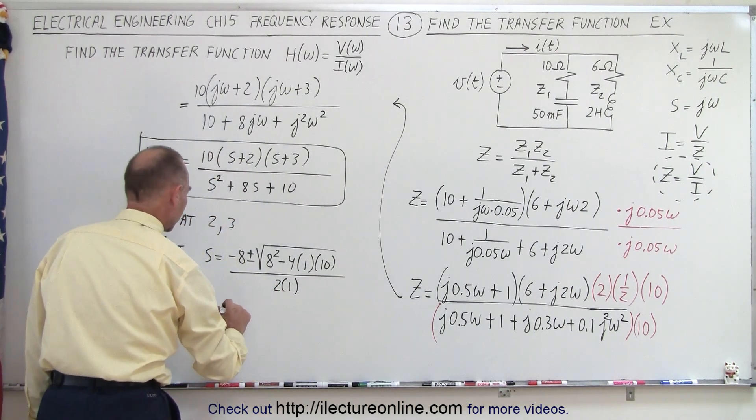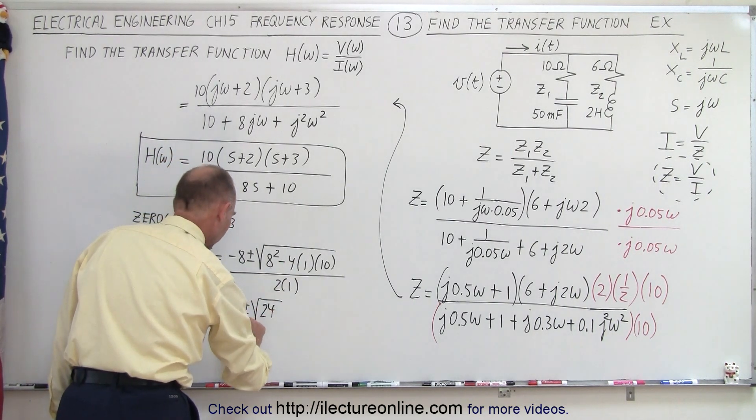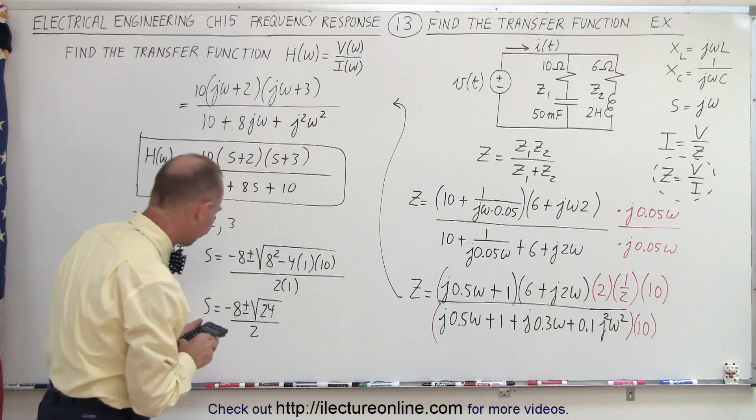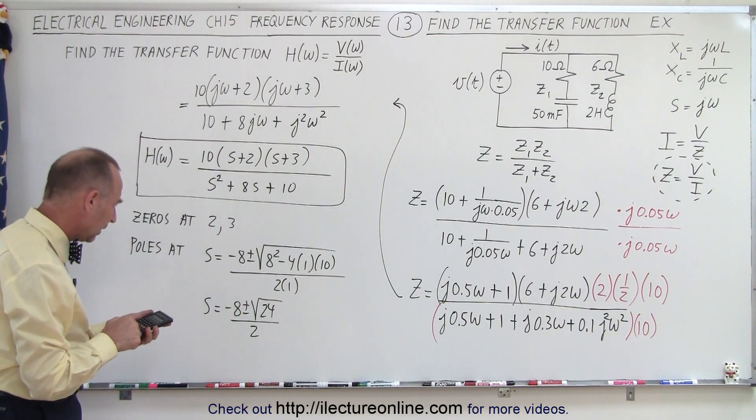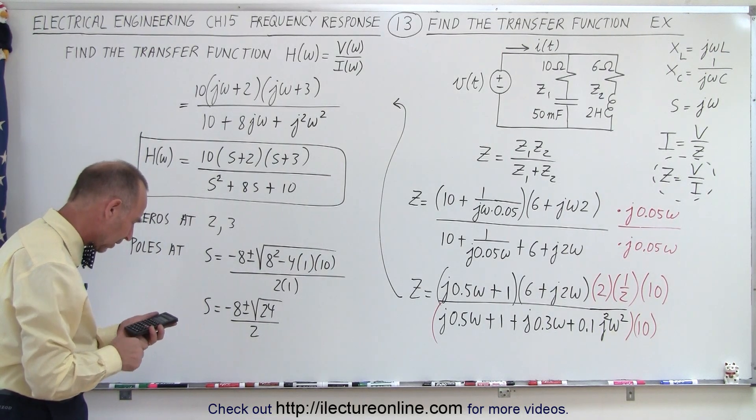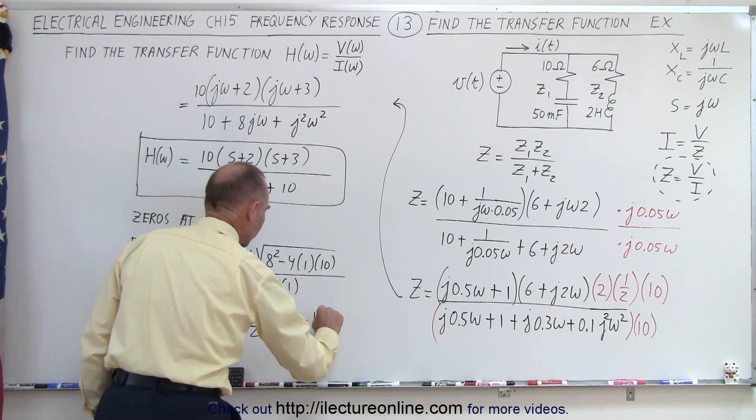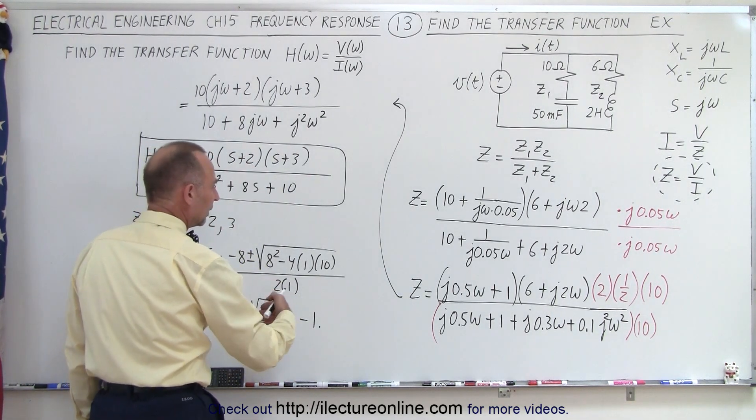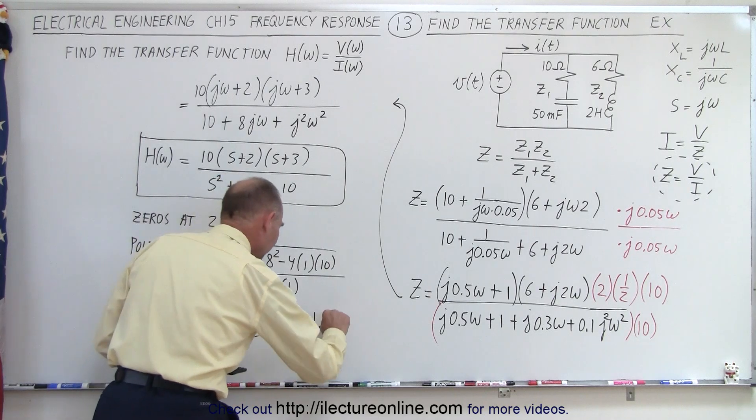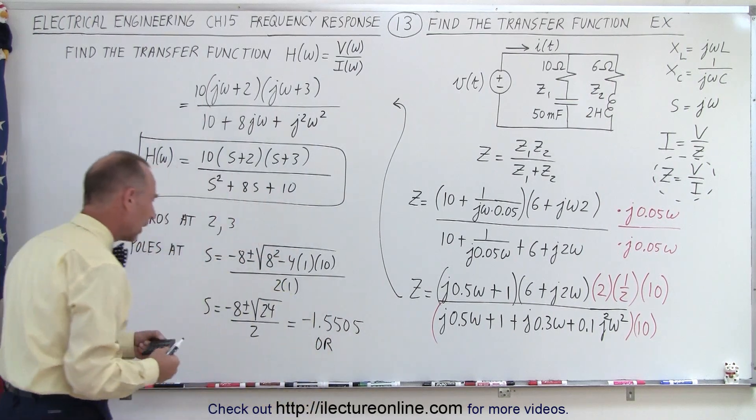So, in other words, S is equal to minus 8 plus or minus the square root of 64 minus 40, which is 24, divided by 2. And so, let's see what the two poles are going to be in this case. Take the 24, take the square root of that. And if I take the plus of that, so that's minus 8, divide by 2 equals, that gives me minus 1.505. So, that will be equal to minus 1 point, and of course, the pole will be on the other side of the vertical axis.